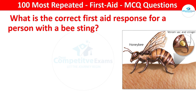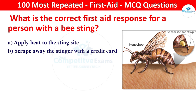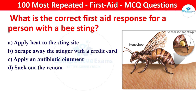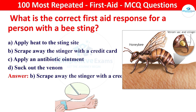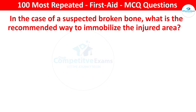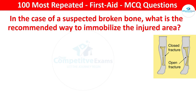Next question: what is the correct first aid response for a person with a bee sting? Your options: apply heat to the sting site, scrape away the stinger with a credit card, apply an antibiotic ointment, or suck out the venom. The right answer is scrape away the stinger with a credit card. Scraping away the stinger helps avoid squeezing more venom into the skin.